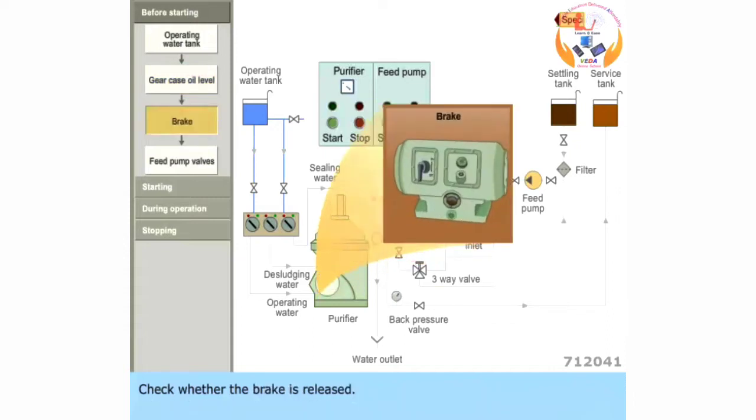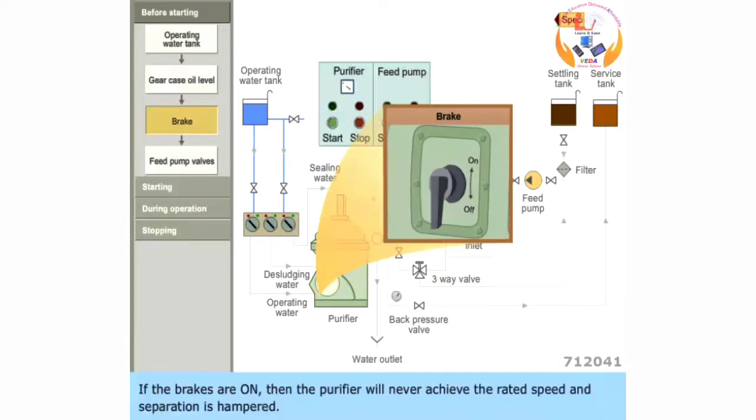Check whether the brake is released. If the brakes are on, then the purifier will never achieve the rated speed and separation is hampered.